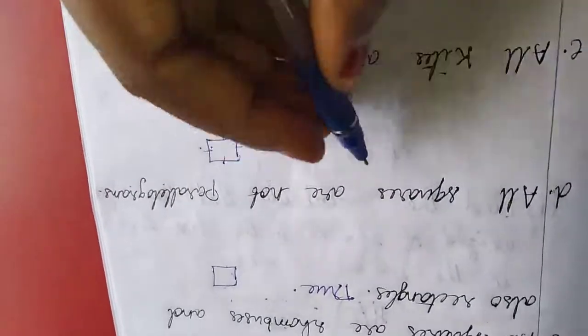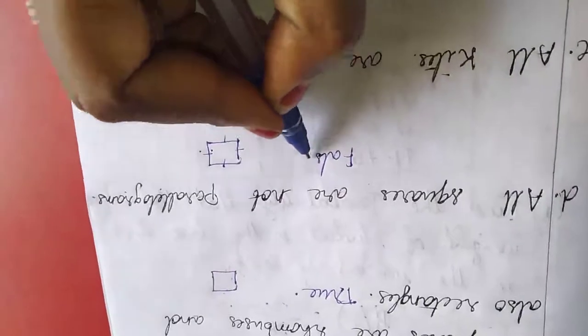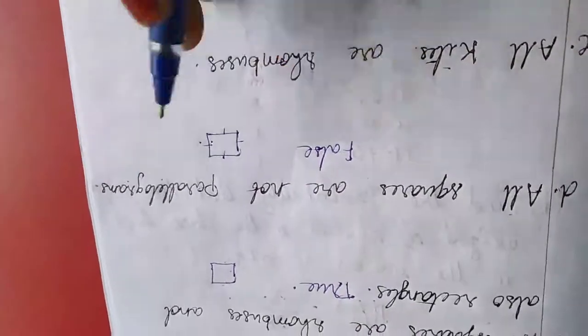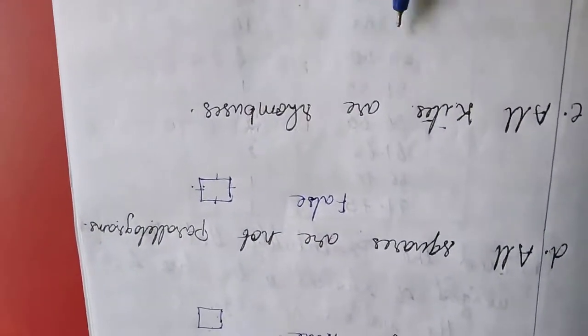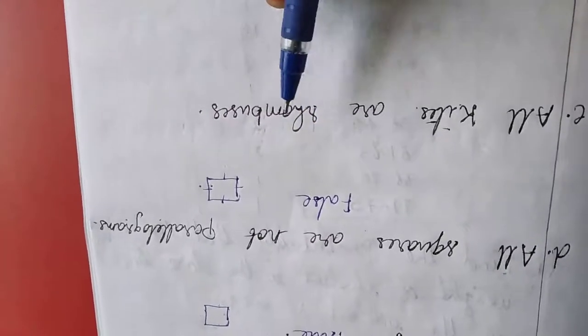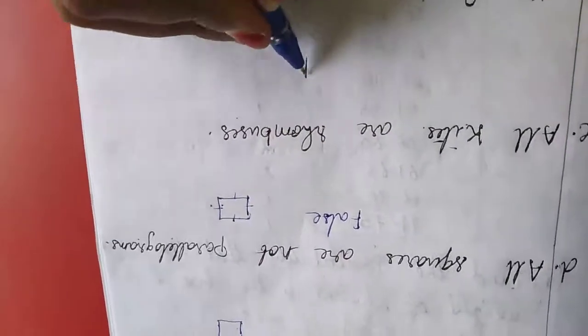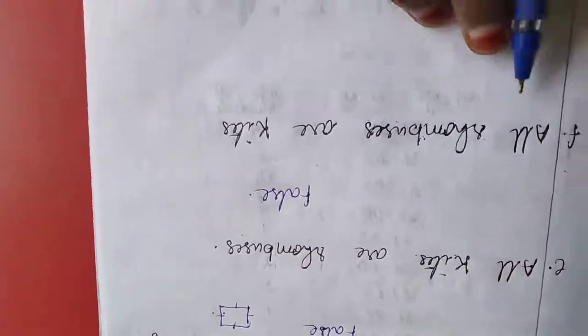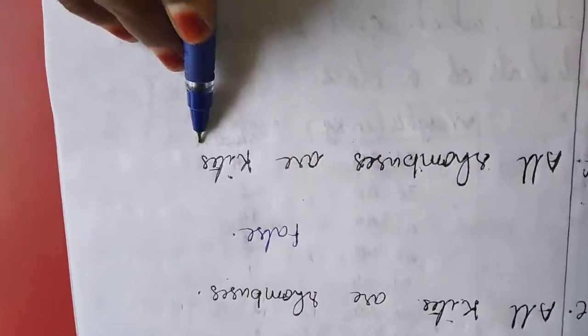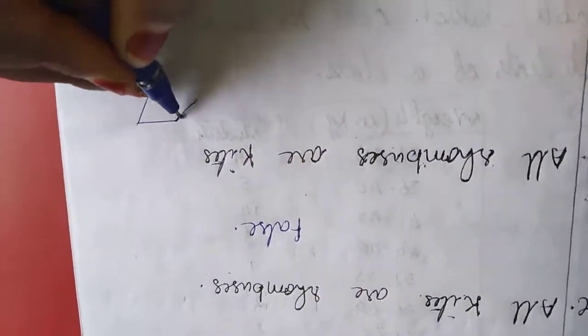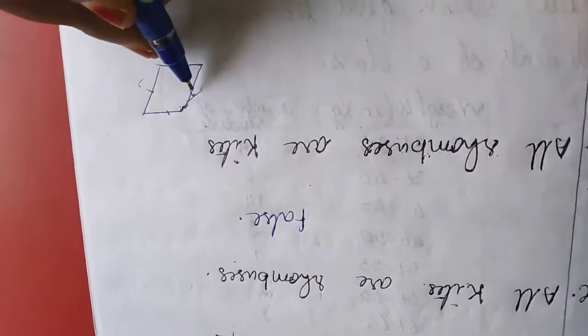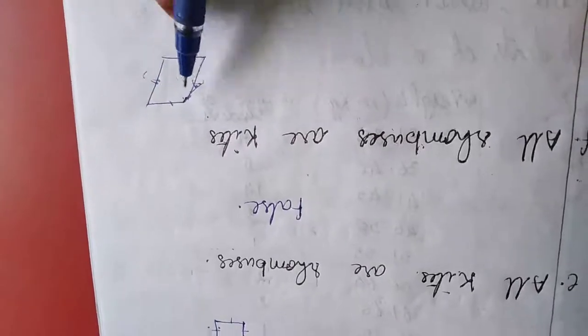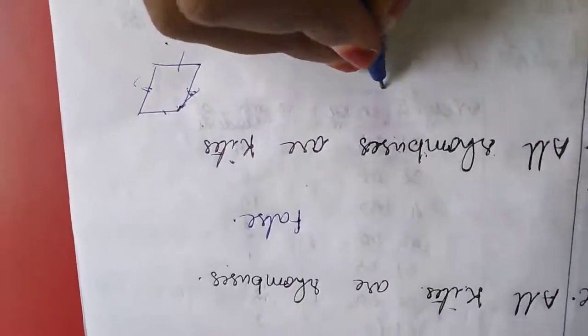All kites are rhombuses, both sides equal, so it is false. Next one, all rhombuses are kites. Rhombuses have all sides equal, so it is true.